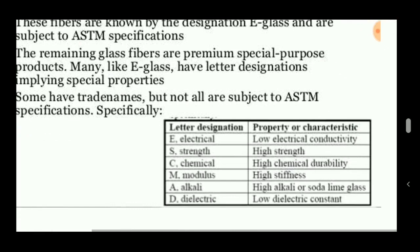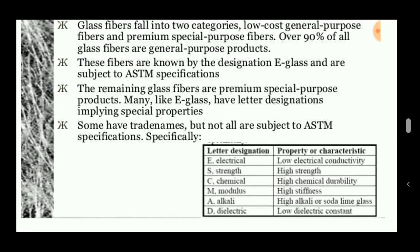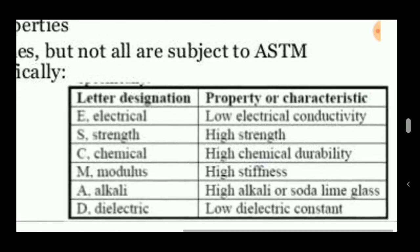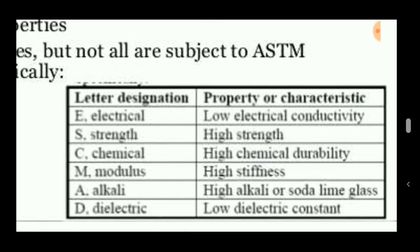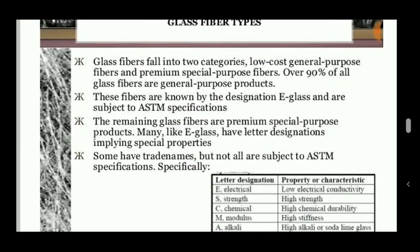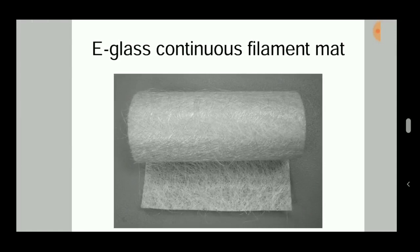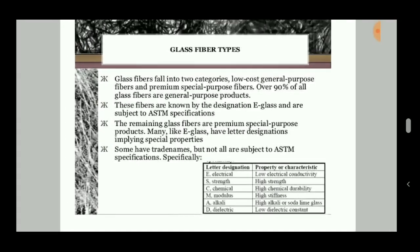Some letter designations are used to indicate properties: E designates electrical properties such as low electrical conductivity; S for high strength; C for high chemical durability; M for high stiffness; A for alkali; and D for low dielectric constant. E-glass, meaning low electrical conductivity glass, is used to make continuous filaments formed into mats.